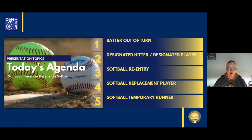Today's agenda will consist of five topics: batter out of turn; designated hitter in baseball and designated player in softball; re-entry in softball; replacement player in softball, better known as the blood rule; and the last topic, temporary runner in softball. This webinar consists of a lot of text in the slides, as we have some difficult rules in the presentation, and I thought it was good to have the rules visible in the presentation deck.